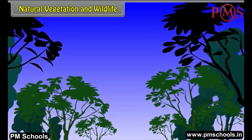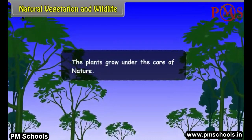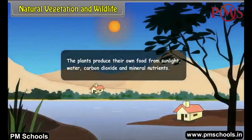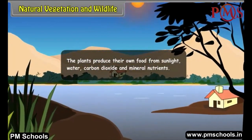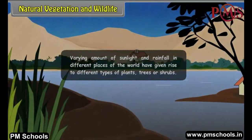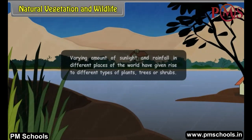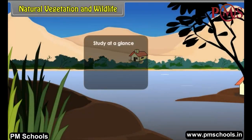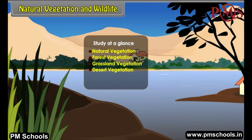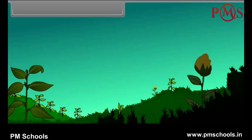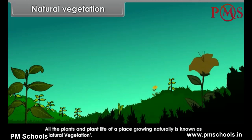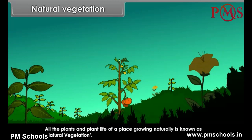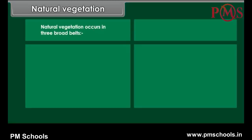Natural Vegetation and Wildlife. The plants grow under the care of nature. The plants produce their own food from sunlight, water, carbon dioxide and mineral nutrients. Varying amounts of sunlight and rainfall in different places of the world have given rise to different types of plants, trees or shrubs. Each of these plant groups form a large ecosystem occupying parts of the continent. Natural vegetation occurs in three broad belts: forests, grasslands, and deserts.